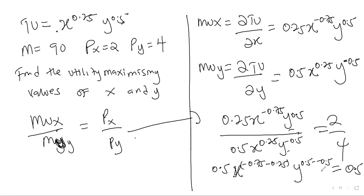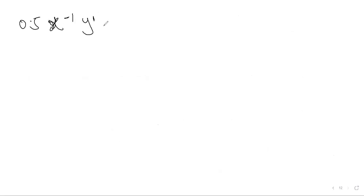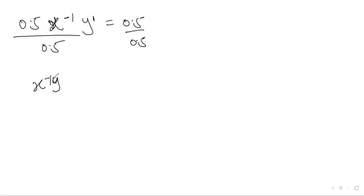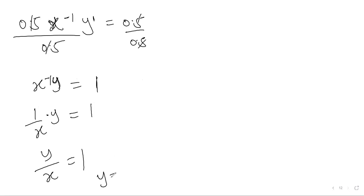So we get x raised to the power negative 1 times y raised to the power 1 equals 0.5. Dividing both sides by 0.5 gives x raised to the power negative 1 times y equals 1. This is like saying 1 over x times y equals 1, or y over x equals 1, which means y equals x.